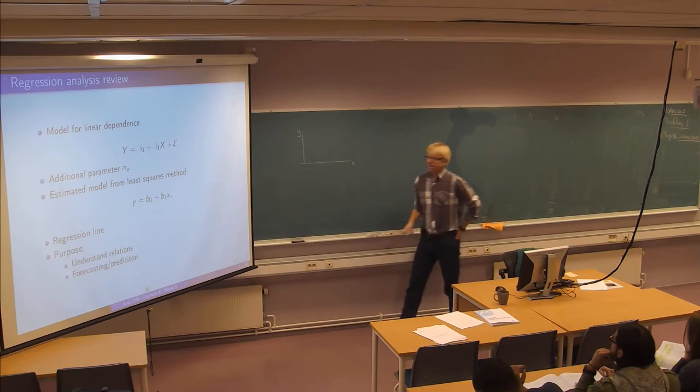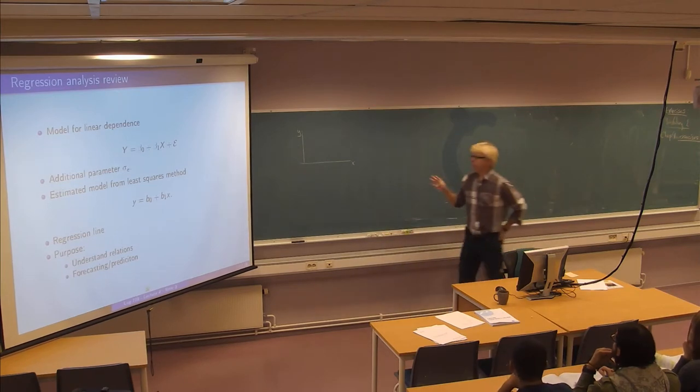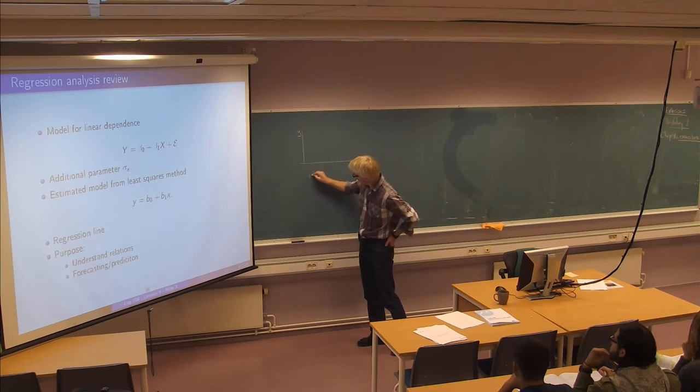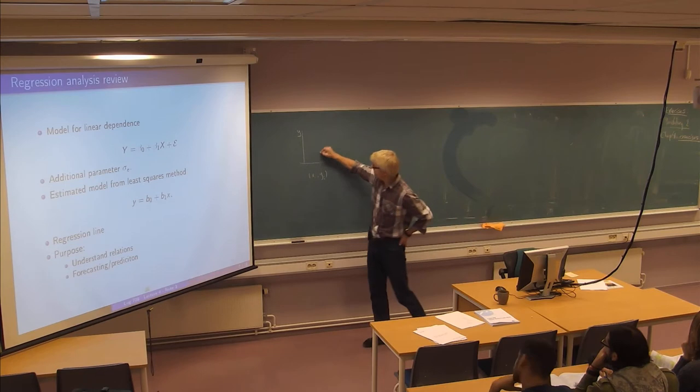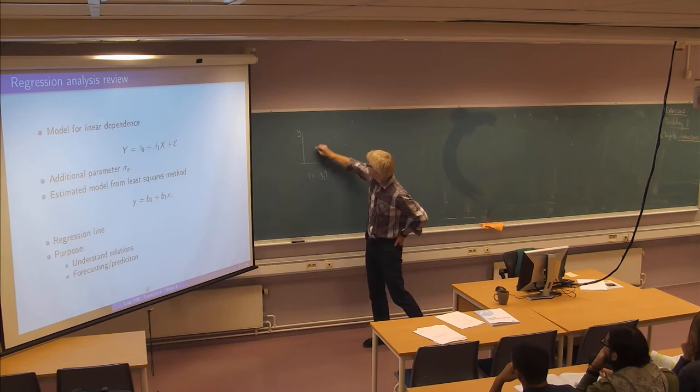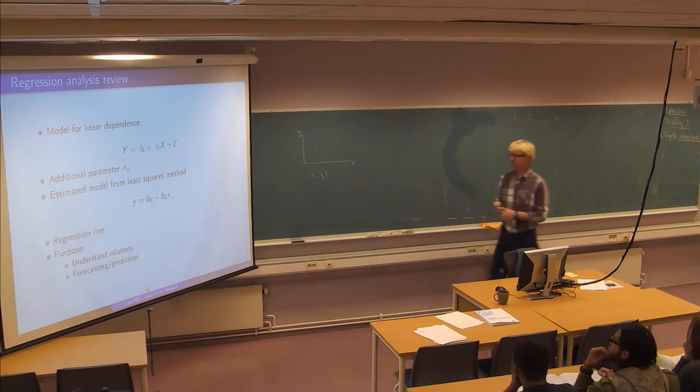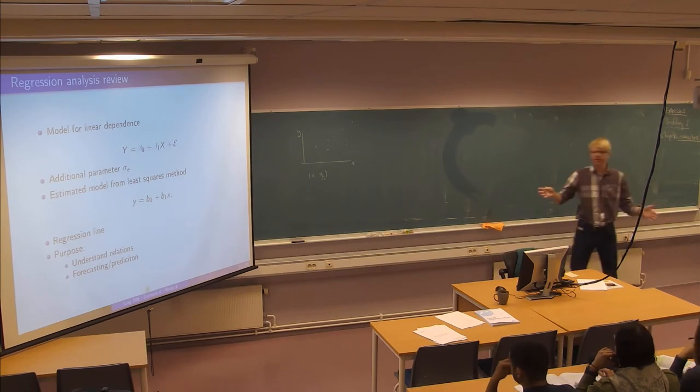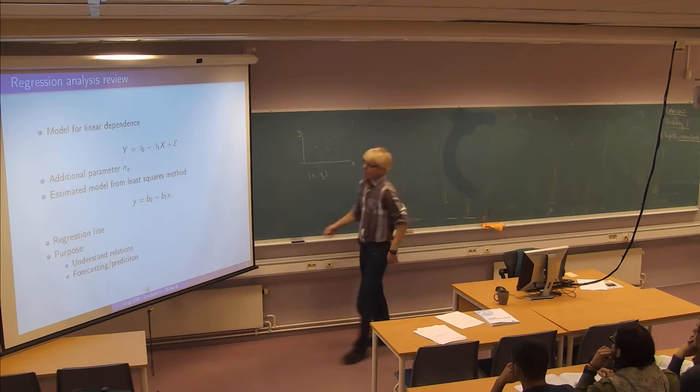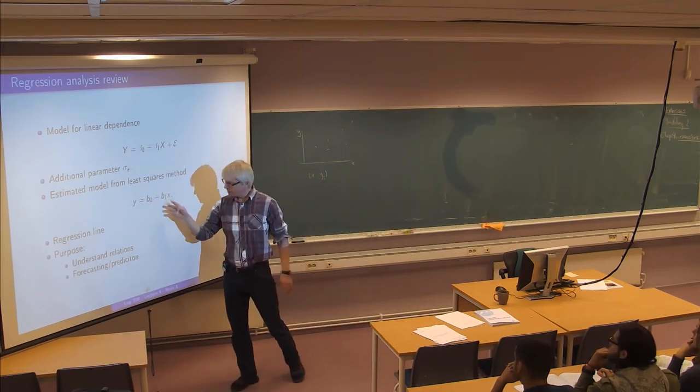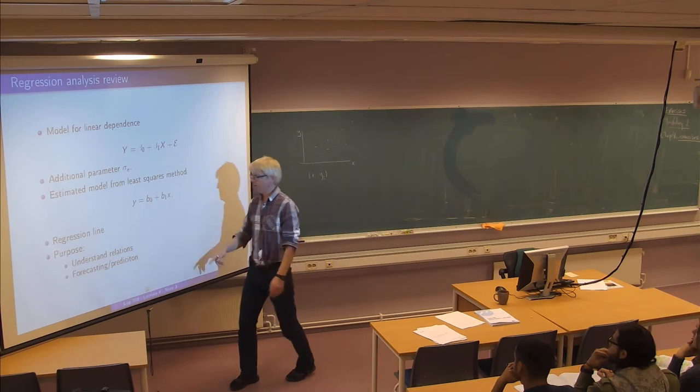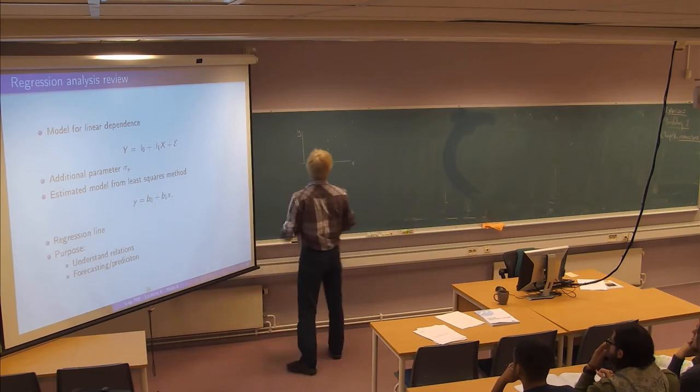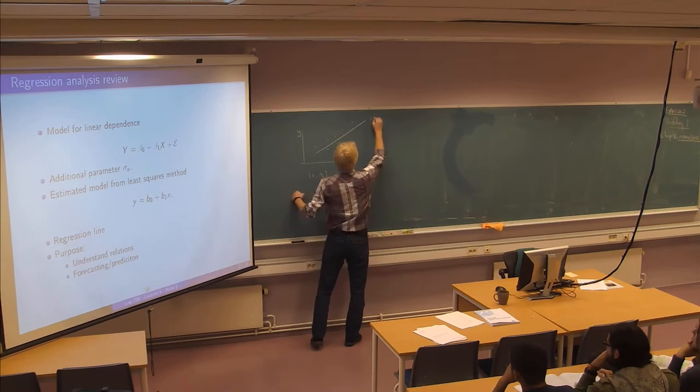So we discussed last week how we would look at a set of observations, x_i and y_i together, and using this least squares method we would estimate what we call the best linear model for this. So we have a theoretical model and we have a concrete estimated line with some numbers.